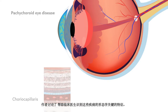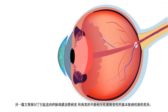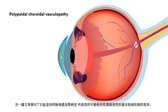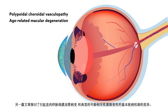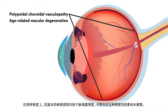Another article explores the difference in the basic pathogenic mechanisms driving the development of polypoidal choroidal vasculopathy and typical age-related macular degeneration. In part, the propensity to develop these conditions comes down to choroidal thickness, although the factors that determine this thickness aren't fully understood.